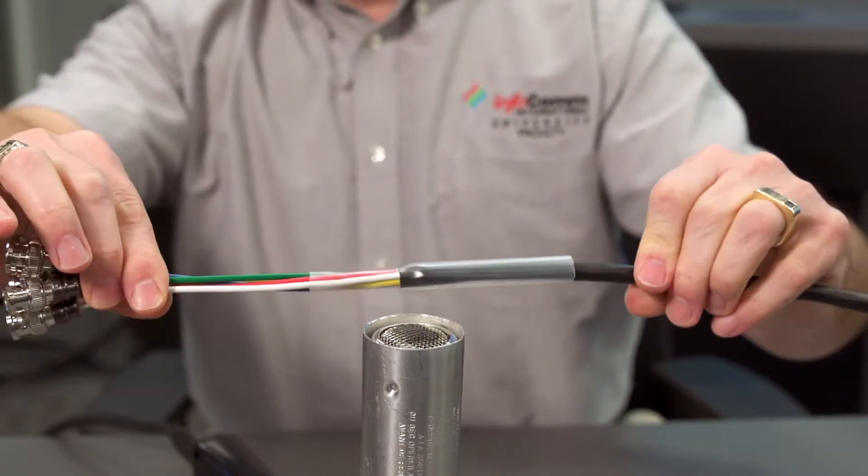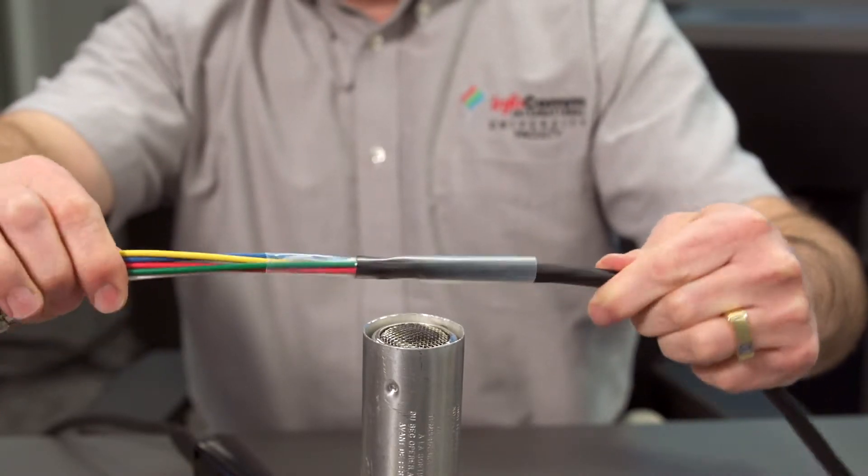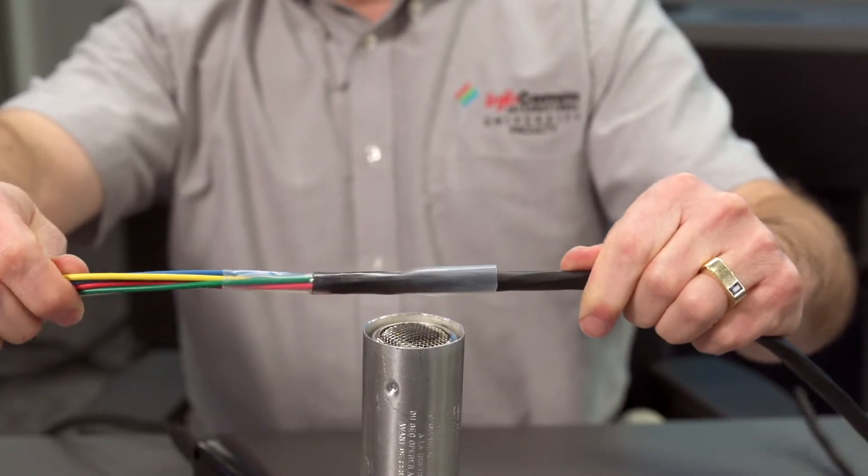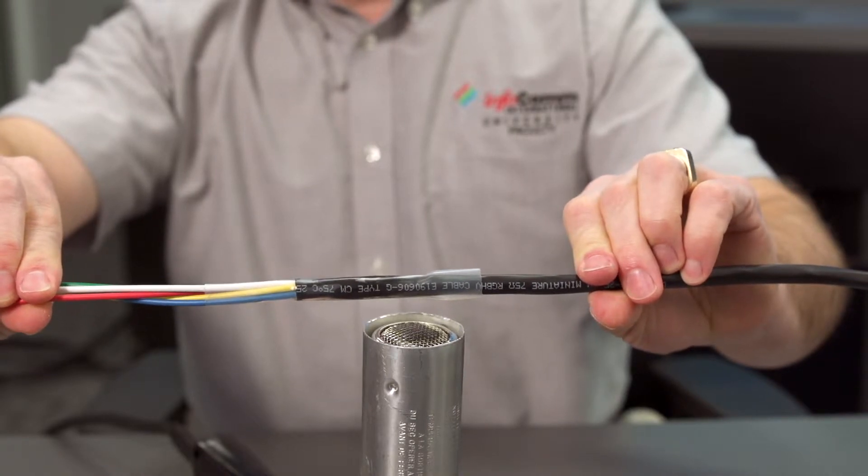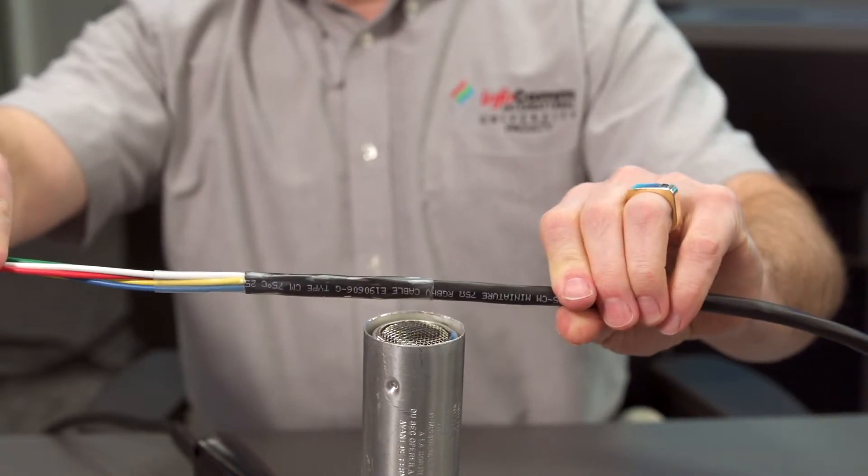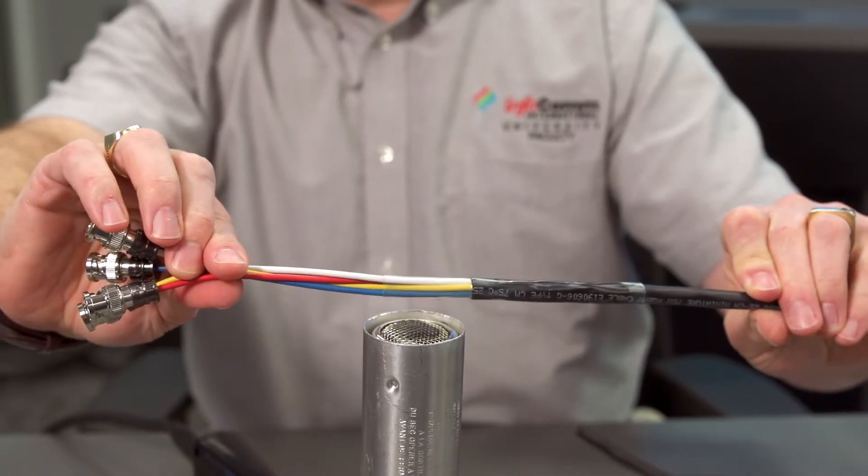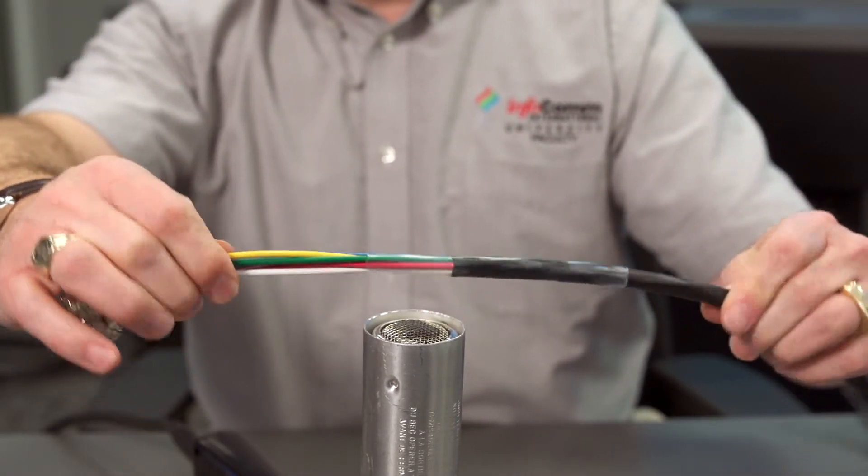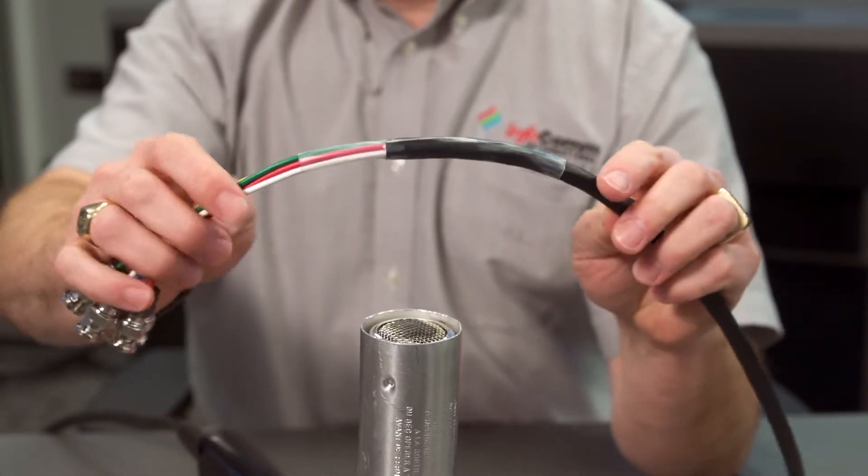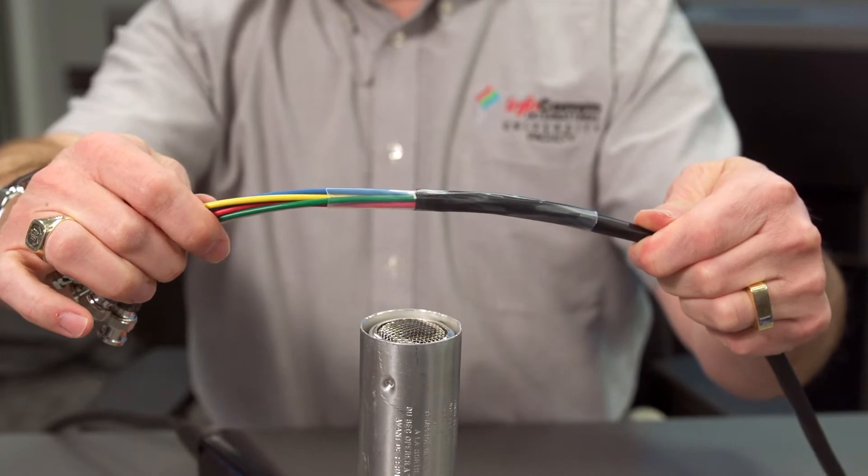And again in the real world we probably use a black heat shrink but for this demonstration we're using clear so you can see what's happening with the connection. Now that heat shrink is going to add a little bit of support here and it's going to clean up this connection, this whole cable assembly so it's nice and attractive for your client.